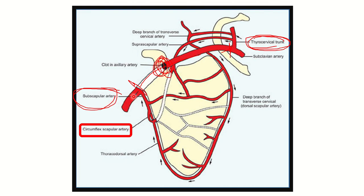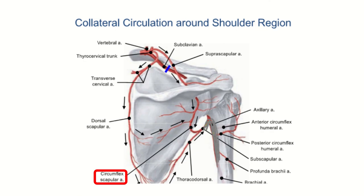The subscapular artery provides a branch which is the circumflex scapular artery, and this circumflex scapular artery finally connects with the thyrocervical trunk. There is another pathway as well that connects with the thyrocervical trunk. So although a large area is obliterated, the circulation will be established successfully. In another picture, we can see the thyrocervical trunk branching from the subclavian artery.